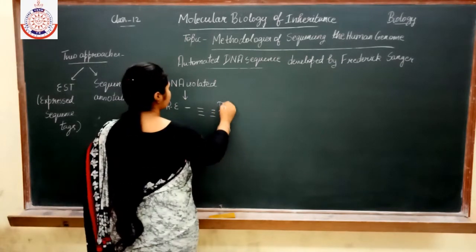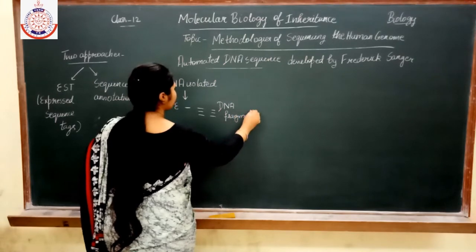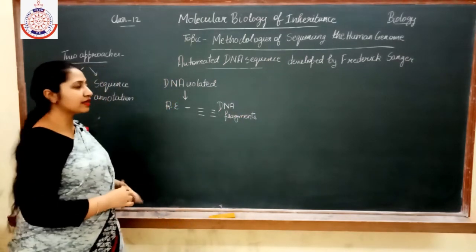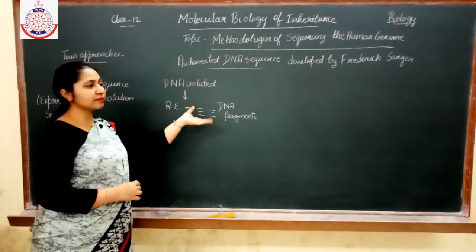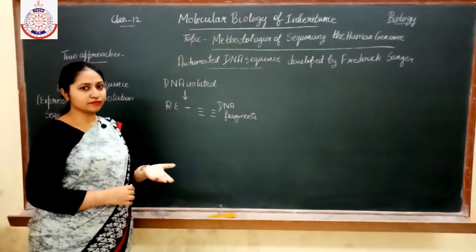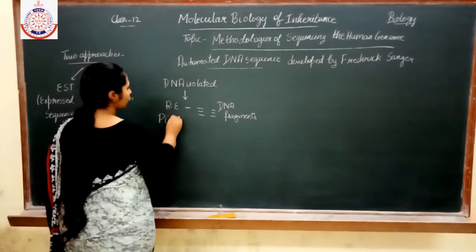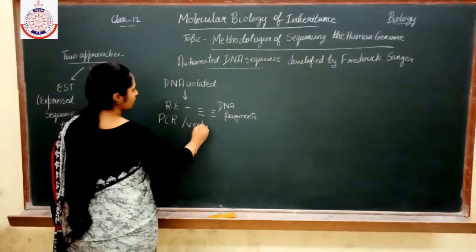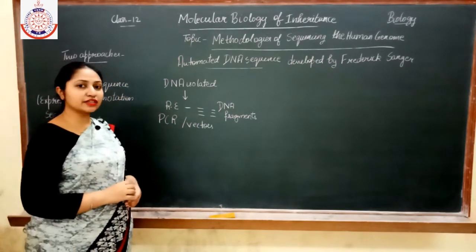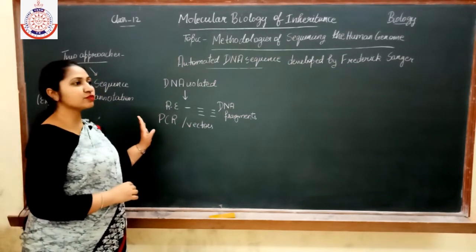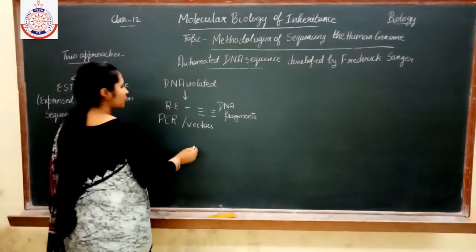When the DNA fragments are produced, these fragments are then amplified — produced in large numbers. Amplification is done by the process of PCR as well as by the process of vectors. PCR is a machine — polymerase chain reaction — which helps in producing more copy numbers of the DNA.